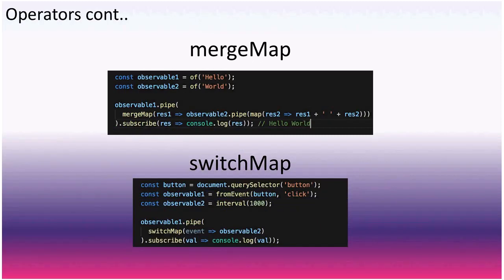MergeMap and switchMap tend to confuse people learning RxJS because it's unclear why you need them and the documentation explains them strangely. With two observables — an outer emitting 'hello' and an inner emitting 'world' — you pipe the outer through mergeMap to the inner, passing whatever the outer emits into the inner observable and essentially merging them into one. The inner won't trigger until the first emission of the outer.